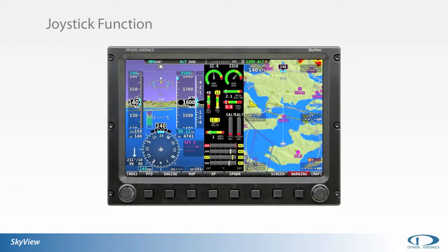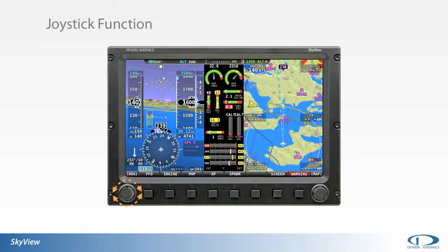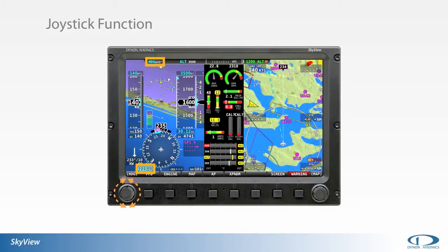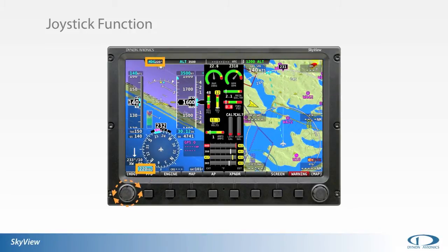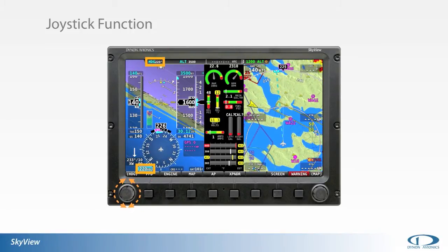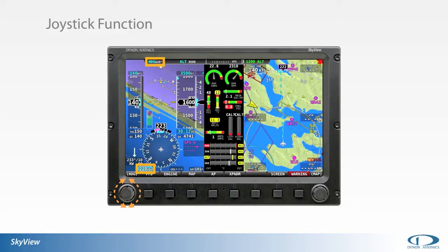Rotation of the joystick knob is used often in the SkyView interface. Primarily, either knob is rotated to change the value of the selected function displayed on the screen directly above the corresponding knob. Typically, rotating the knob will be used to select a new heading, altitude, or adjust the altimeter setting.